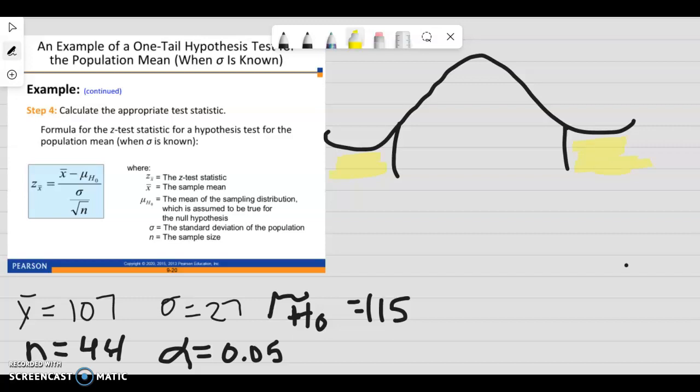Okay, so if we plug into our formula to get our test statistic. So our mean of our sample, and then our mean of our sampling distribution. And then the standard deviation was 27, and then the square root of n is 44.